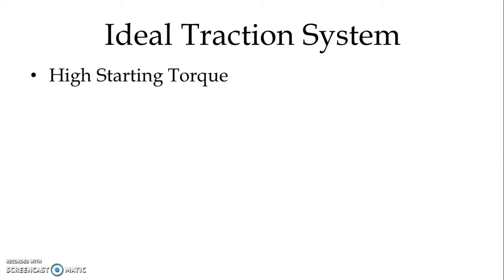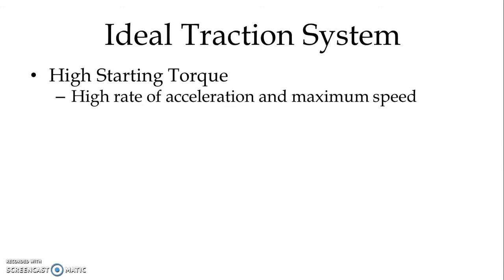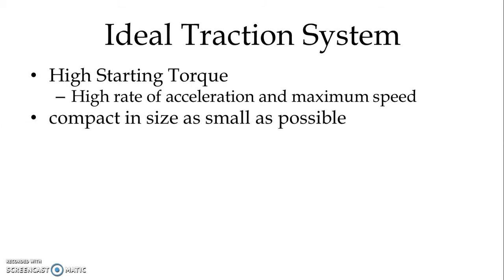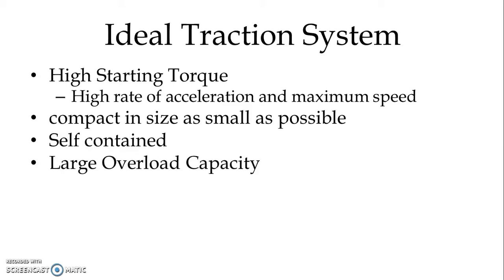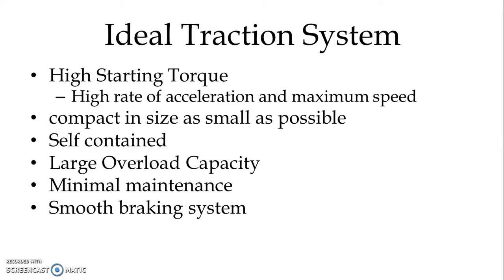An ideal traction system must exert high starting torque, and because of high starting torque, a high rate of acceleration and maximum speed is possible. It should be compact in size, as small as possible. It must be self-contained, meaning it can travel on any route. It should have large overload capacity, even for a shorter duration of time. Maintenance required should be minimum. The braking system must be smooth, and regenerative braking is preferable.